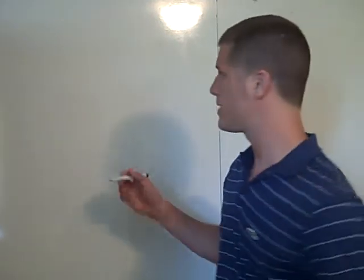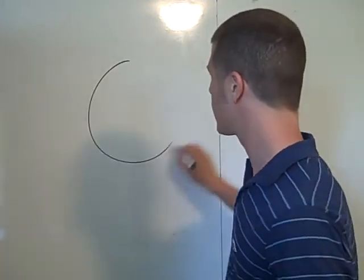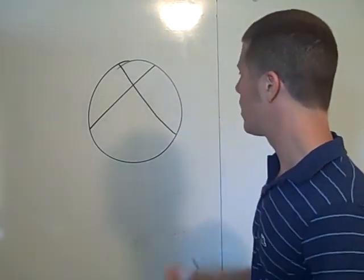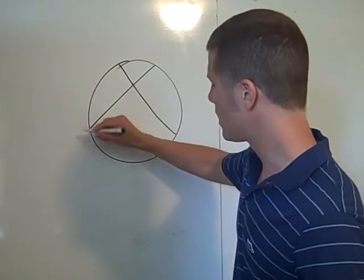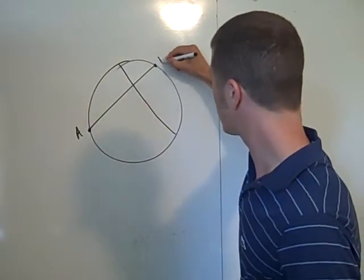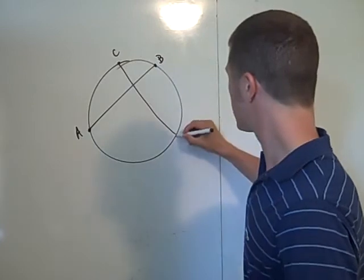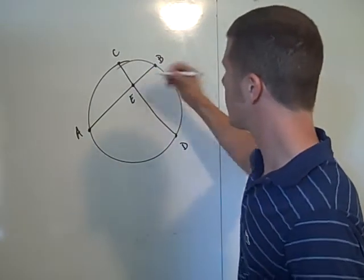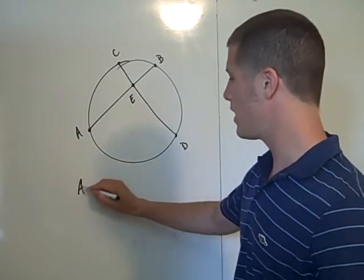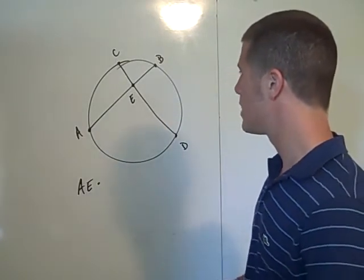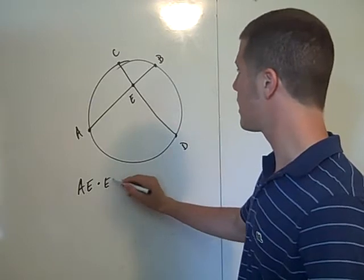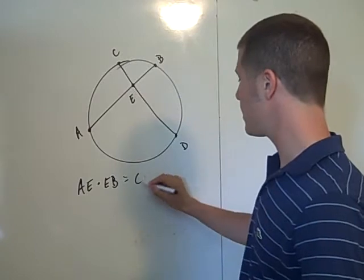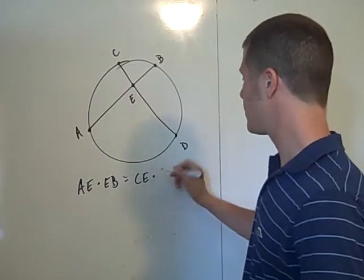There's a theorem about segments in circles that says if you have two chords that intersect inside the circle, I'll label it AB and CD, and let's say they intersect at point E. Then there is this theorem that says that the segment AE times the length of the segment EB is equal to CE times ED.